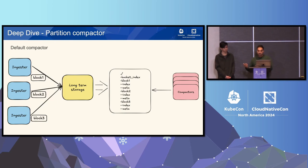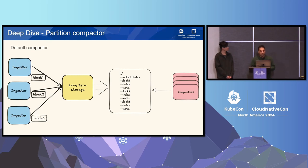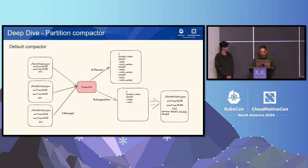Before talking about the partition compactor, let me briefly explain how the compactor itself works. As Charlie mentioned, the compactor gets blocks and puts them together to improve query efficiency and decrease duplicated data. Each block uploaded by ingesters has an index and a metafile — the index contains label names and symbols, and the metafile contains metadata for that block. The compactor can be separated into three stages: the grouper, the planner, and the compaction itself, which is the actual merging of data.